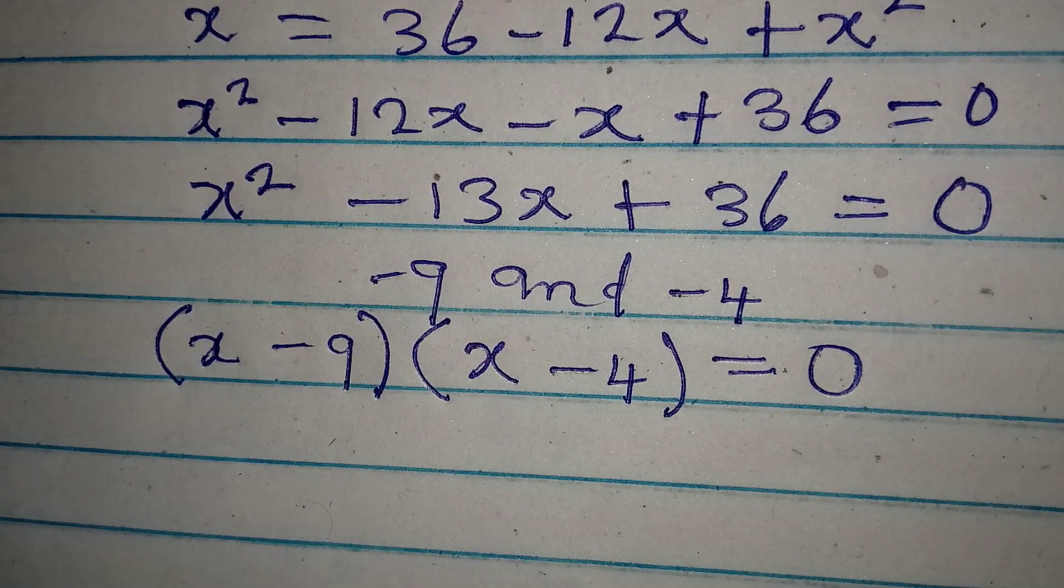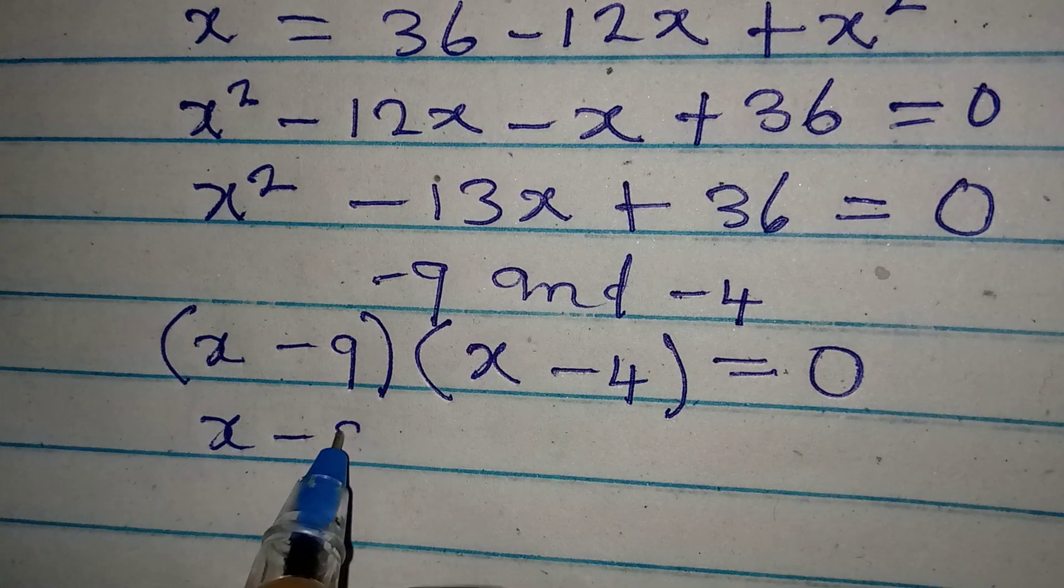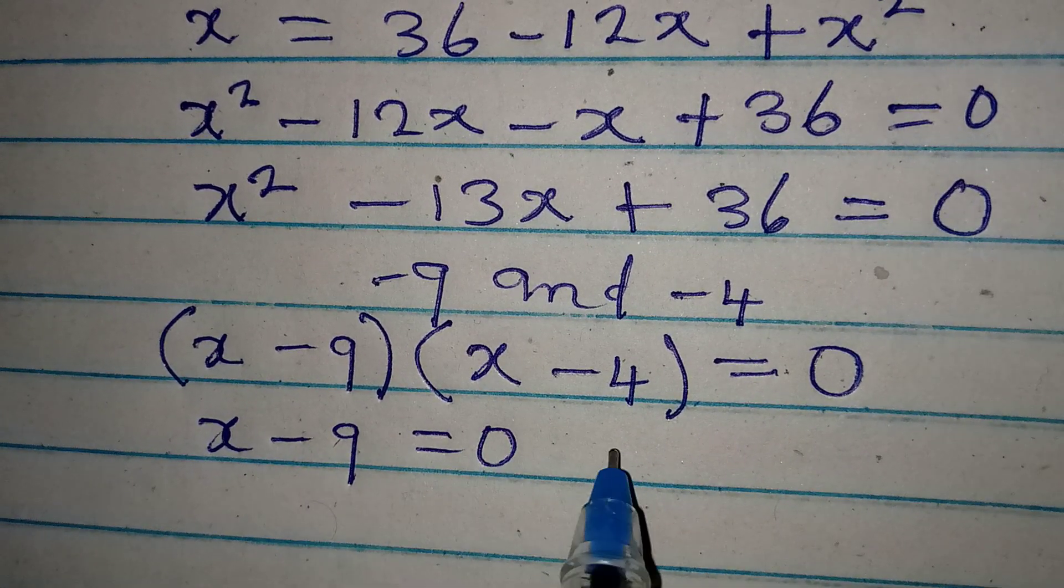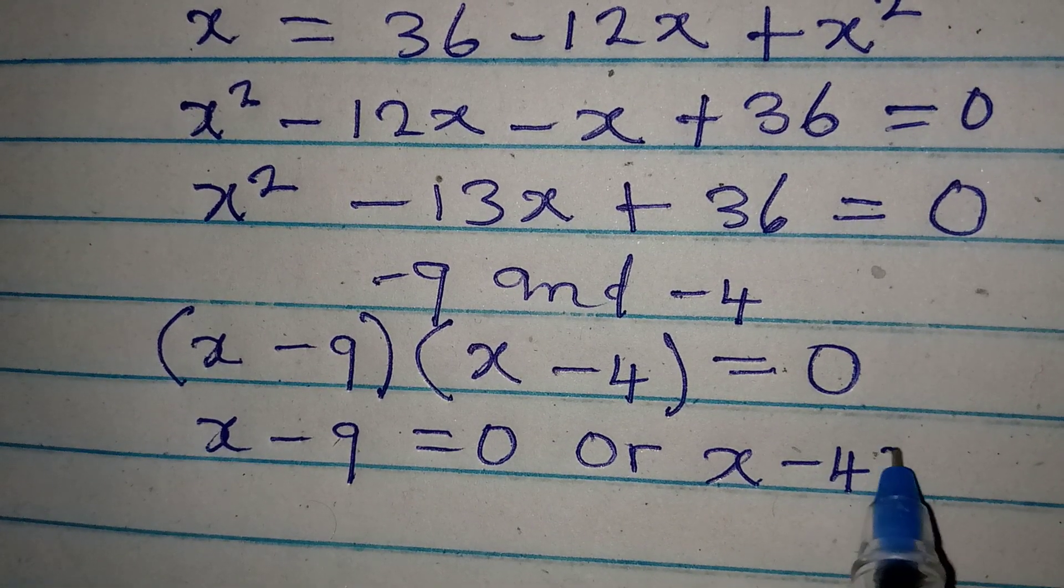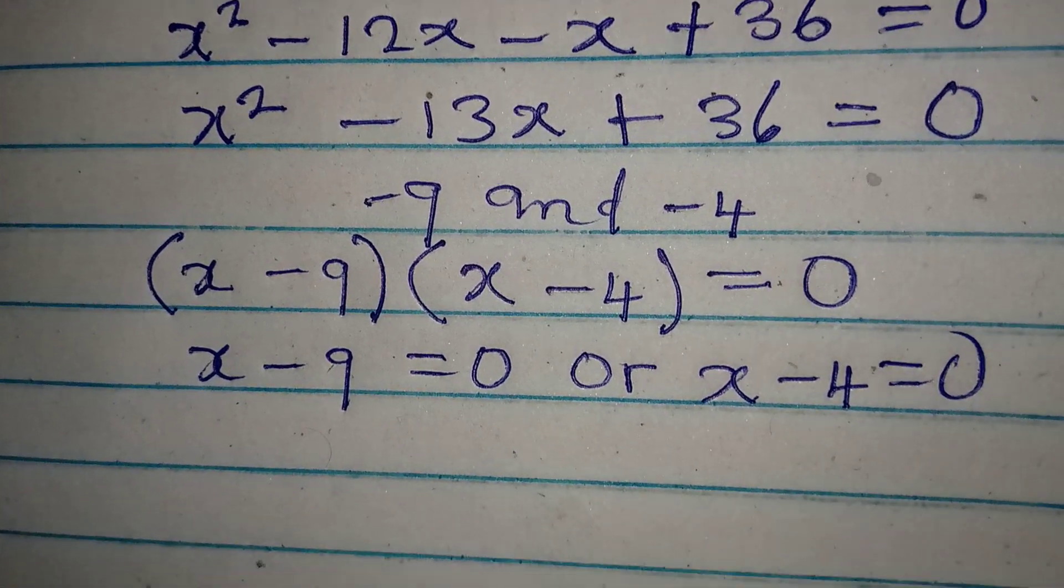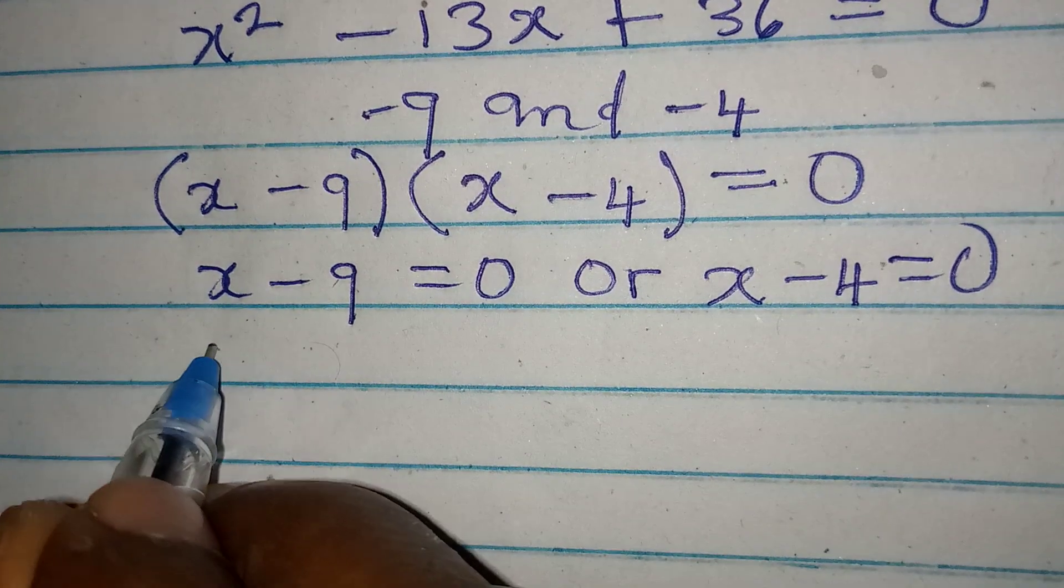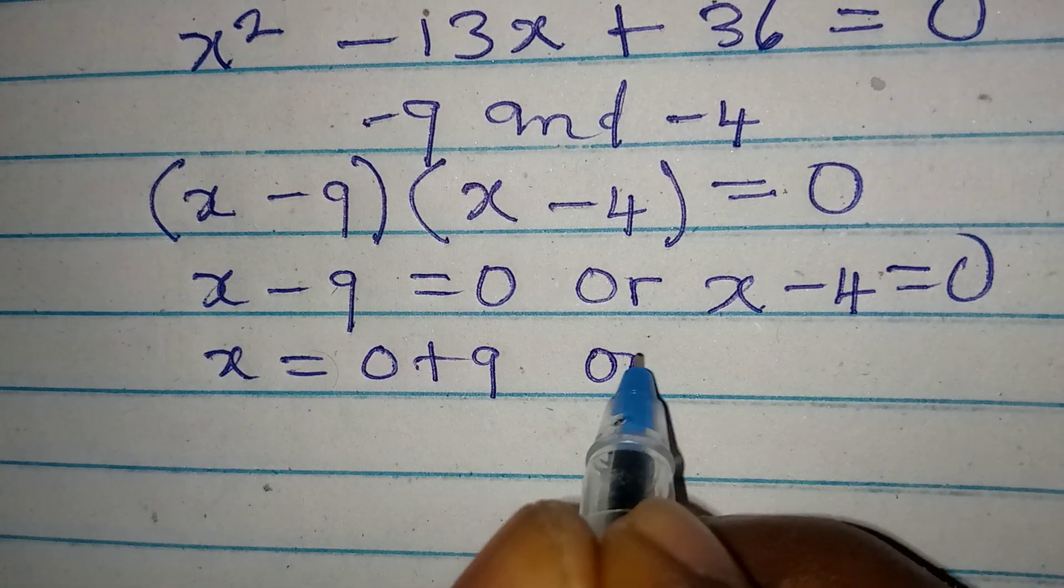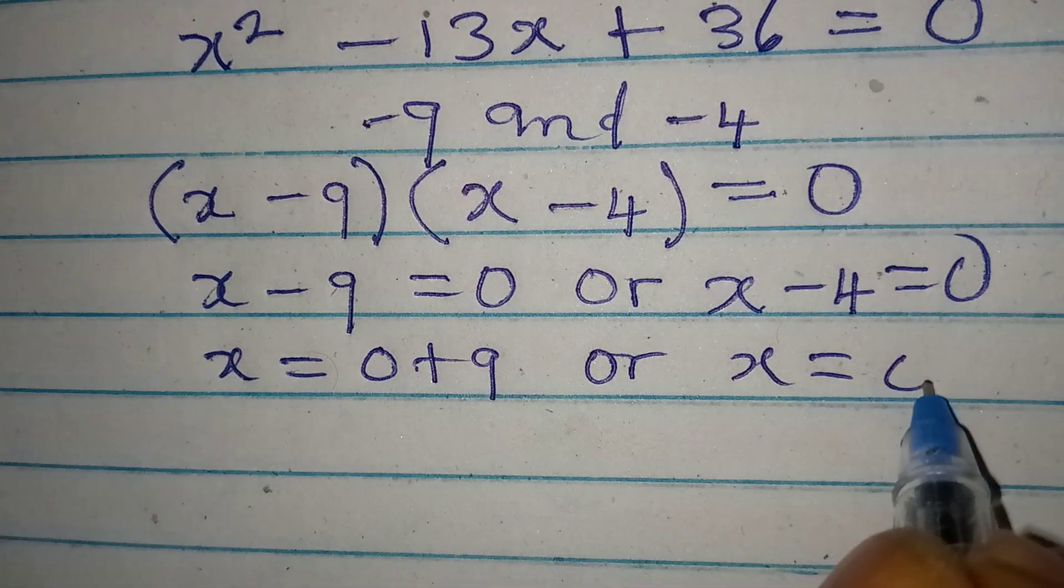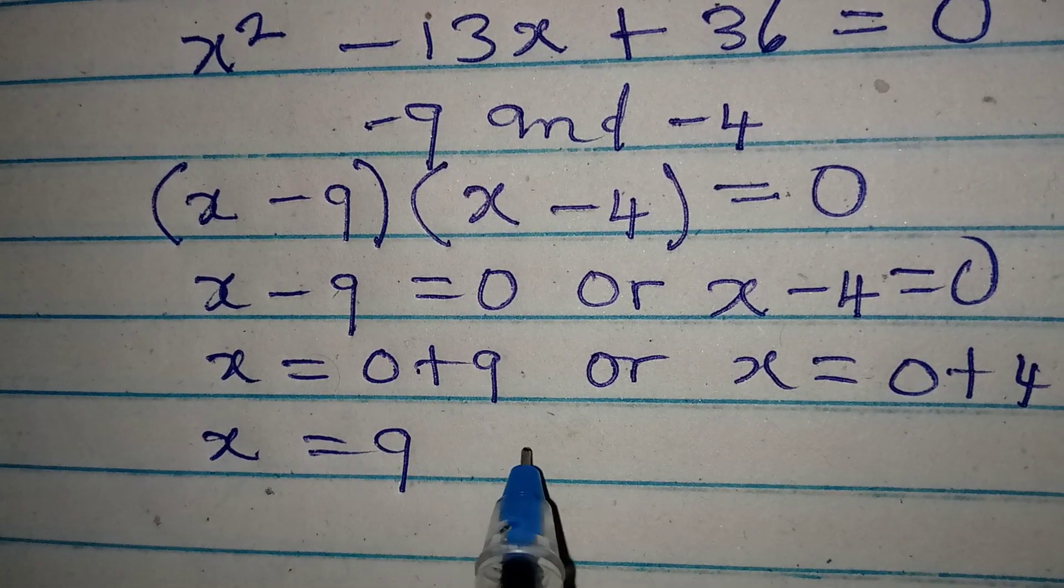For us to proceed, it means that x minus 9 is either equal to 0, or x minus 4 is equal to 0. So x equals 0 plus 9, or x equals 0 plus 4. Our x here is equal to 9, or x is equal to 4.